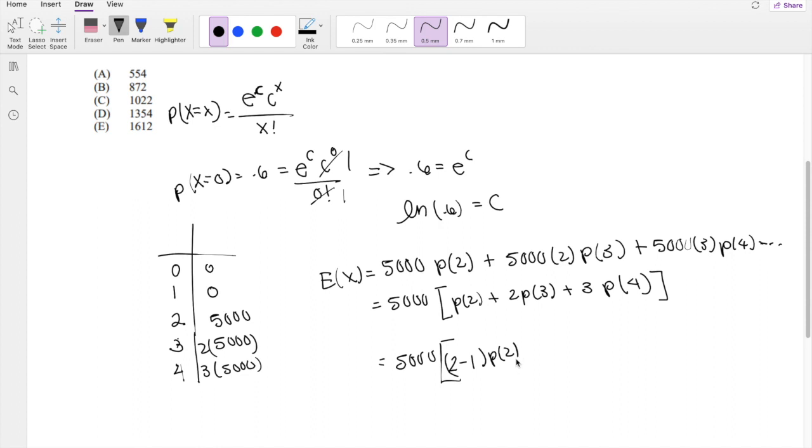2 minus 1, probability of 2, and 3 minus 1, probability of 3. That's because I just wanted to get these two numbers the same. Because that way, that would be exactly the expectation of n, right?